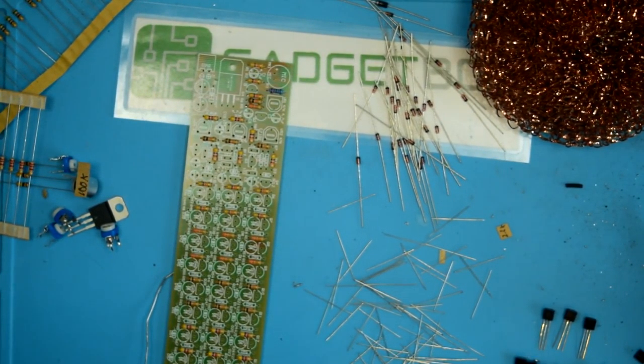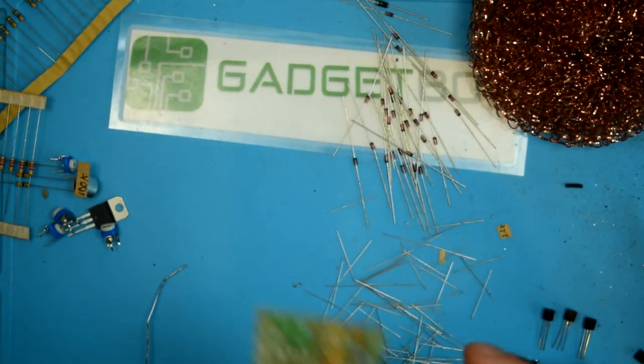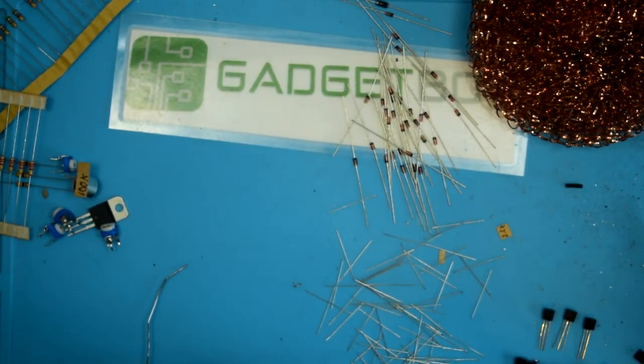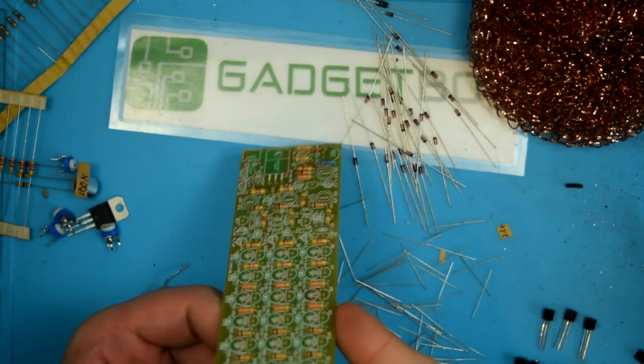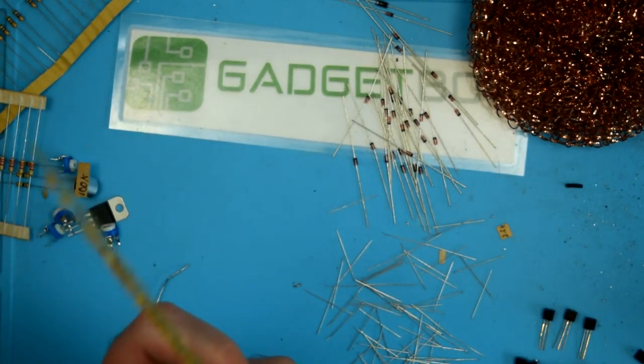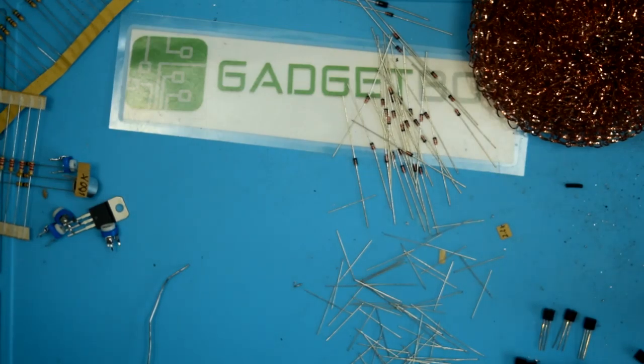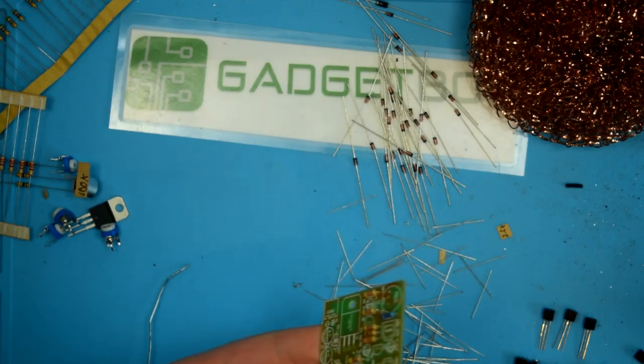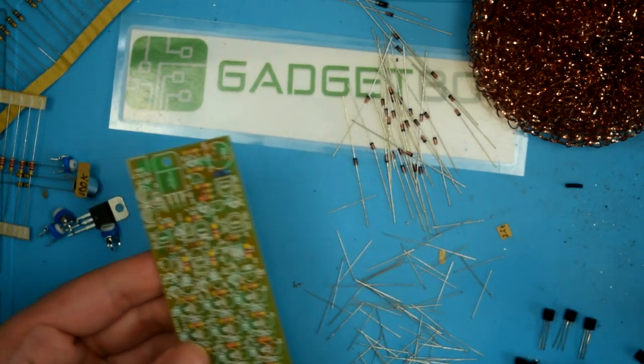Alright, we're going to jump right into part two here. Now, we just finished doing some 47k ohm resistors. So the next... Oh, that's going to bug me. Let's fix that resistor real quick. There we go. It's not level with the board. There we go. Now it's nice and straight.